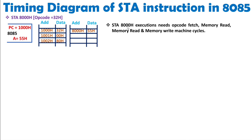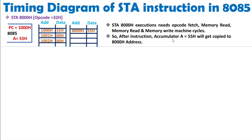The STA instruction executes with the following machine cycles: opcode fetch, then memory read twice, and then a memory write. After execution, the accumulator content gets copied to the address mentioned in the STA instruction, which is 8000h. Now let's see how all these machine cycles appear in the timing diagram, starting with the opcode fetch.